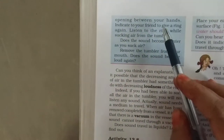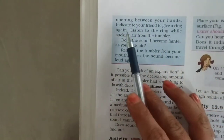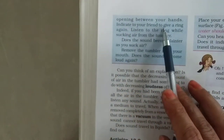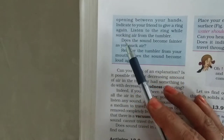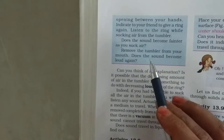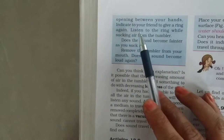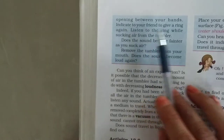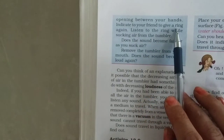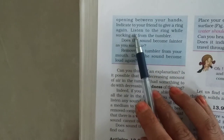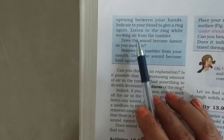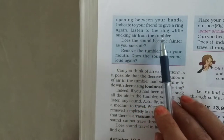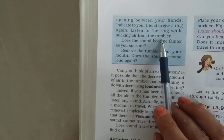Now surround the rim of the tumbler with your hands. Put your mouth on the open space between your hands. Ask your friend to ring again. Now listen to the ring while sucking the air from the tumbler.